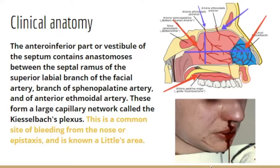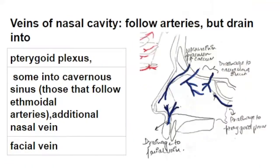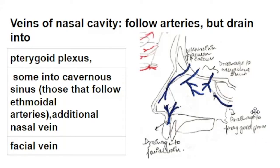Moving on to the venous drainage of the nasal cavity — the veins usually follow the arteries but drain into different structures. The veins in the anterior inferior part drain into the facial vein, those in the posterior part drain into the pterygoid plexus, and the veins accompanying the anterior and posterior ethmoidal arteries drain into the superior ophthalmic vein, which finally drains into the cavernous sinus.